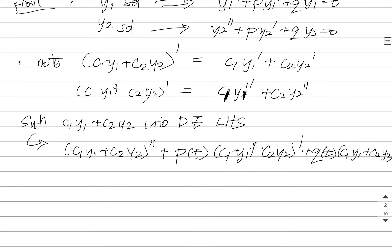A lot of writing here, but you get the idea. We're going to get C1 Y1 double prime, C2 Y2 double prime, P times C1 Y1 prime, C2 Y2 prime, and Q, C1 Y1 plus C2 Y2.